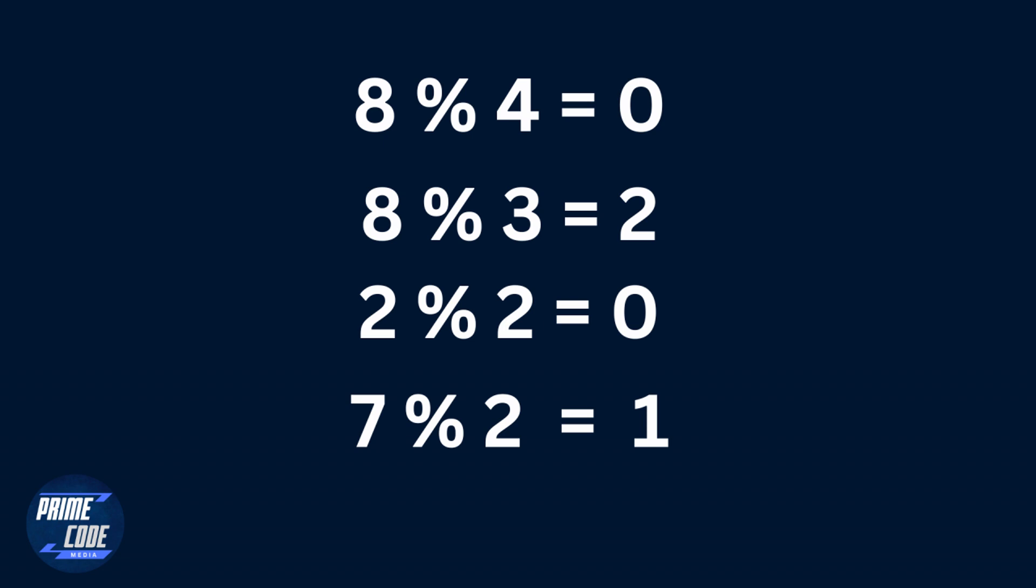If the remainder is zero the number is even. For example, two mod two is zero, so two is an even number. On the other hand, seven mod two equals one, which means seven is an odd number because here we have that one as the remainder.